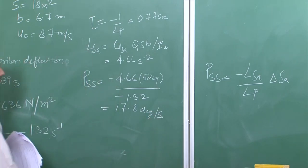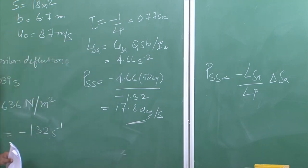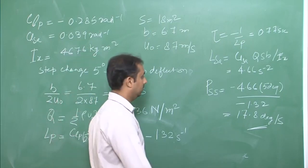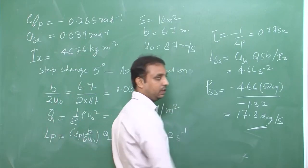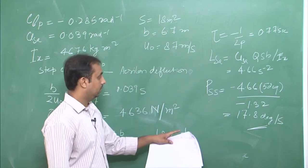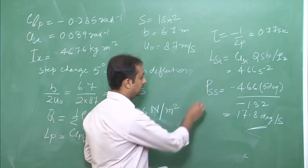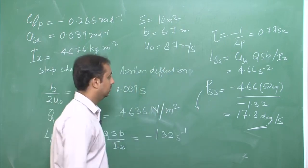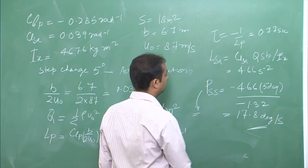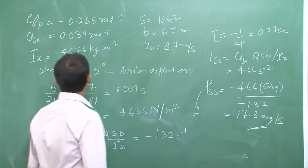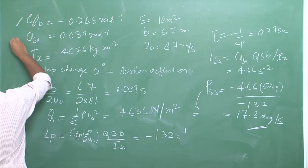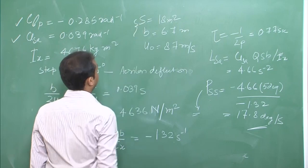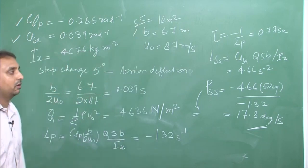As already mentioned, instead of calculating the steady-state roll rate, if we measure it from rate gyros, we can easily derive the aerodynamic coefficients C_Lp and C_L_delta_A, since the geometric values of the aircraft are easy to determine. Let us now take another problem involving a second-order derivative equation.